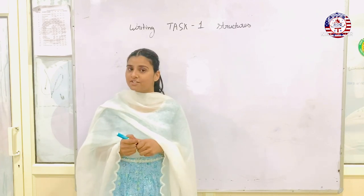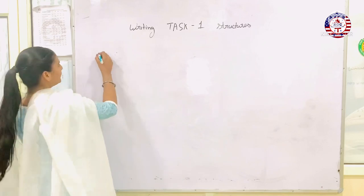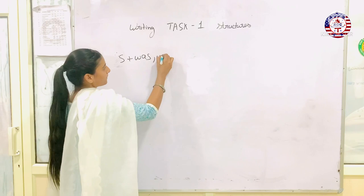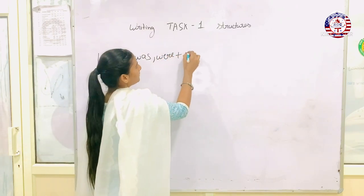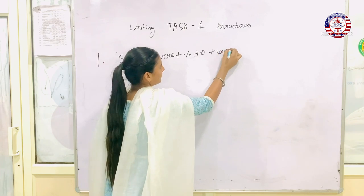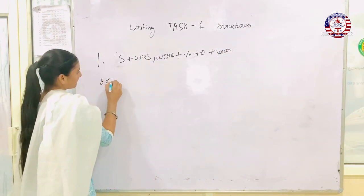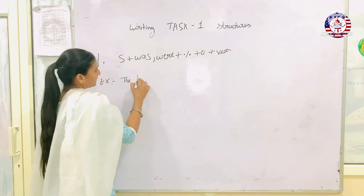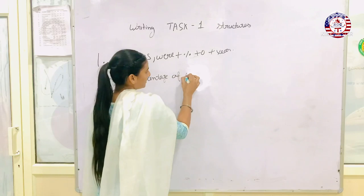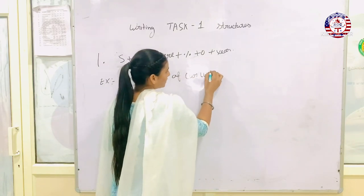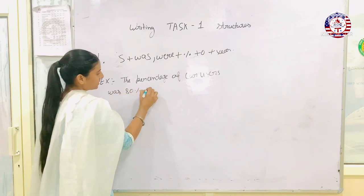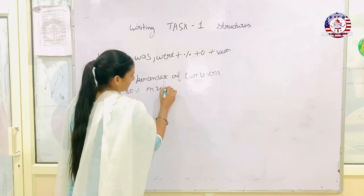The first structure is subject plus was or were, plus percentage, plus object, plus year. For example, the percentage of card users was 80% in 2010.